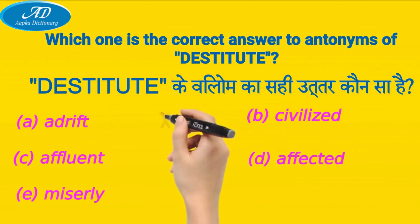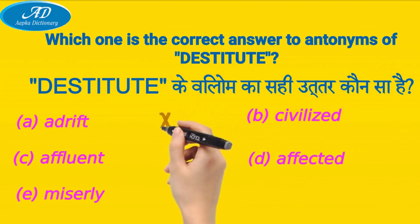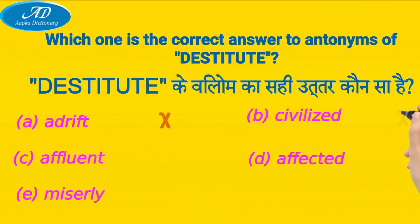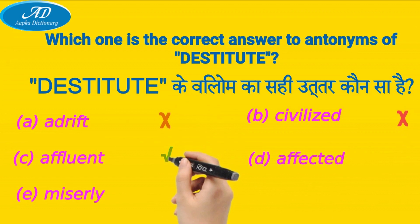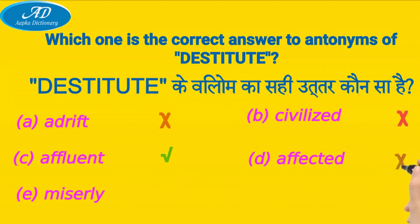Answer: a) adrift — incorrect. b) civilized — incorrect. c) affluent — correct. d) affected — incorrect. e) miserly — incorrect.